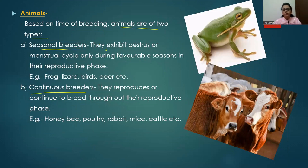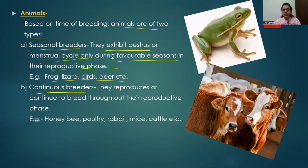Seasonal breeders exhibit estrous or menstrual cycles only during favorable seasons in their reproductive phase — examples include frogs, lizards, birds, and deer. For example, the rainy or monsoon season is the breeding season for frogs because more water is available for external fertilization. These animals are sexually most active only in one particular season and hence are called seasonal breeders.